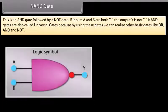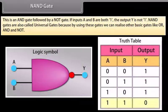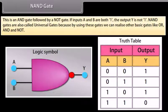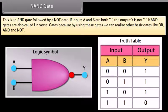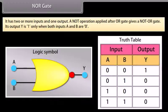NAND gate: A NAND gate is an AND gate followed by a NOT gate. If inputs A and B are both 1, the output Y is not 1. NAND gates are called universal gates because using them we can realize other basic gates like OR, AND, and NOT. NOR gate: It has two or more inputs and one output. The output is 1 only when both inputs A and B are 0.